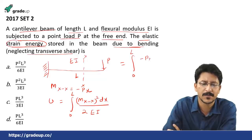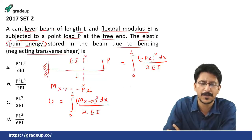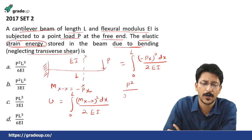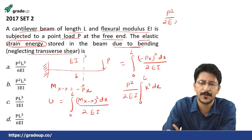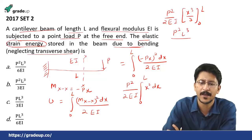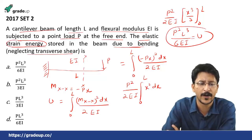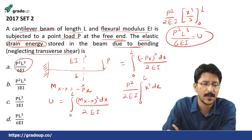Integrating strain energy: U equals integral from 0 to L of (Mxx squared) dx divided by 2EI. With Mxx equals minus Px, this becomes P squared divided by 2EI times integral from 0 to L of x squared dx. Evaluating: P squared by 2EI times L cubed by 3, giving P squared L cubed divided by 6EI. The correct option is option A: P squared L cubed by 6EI.